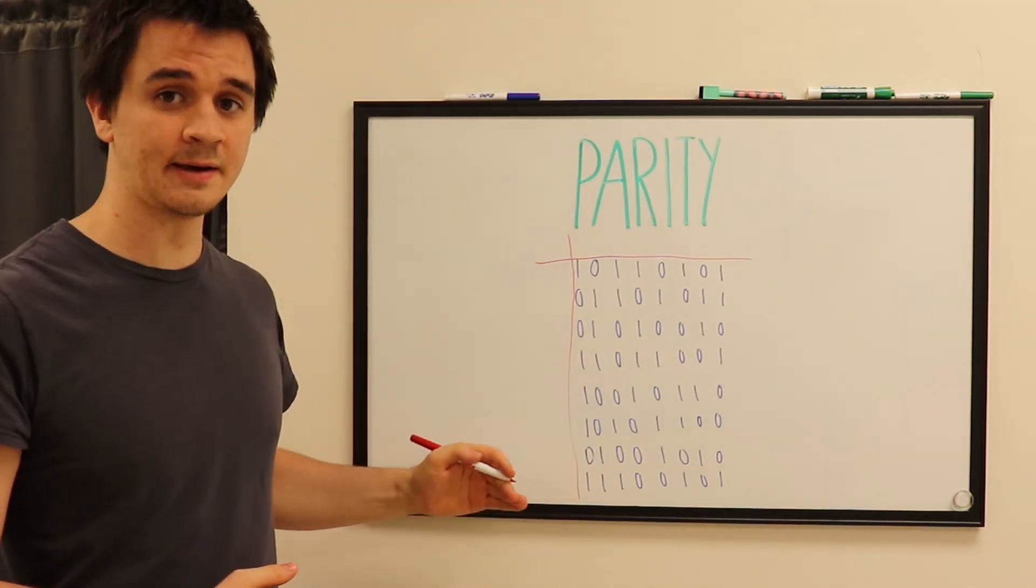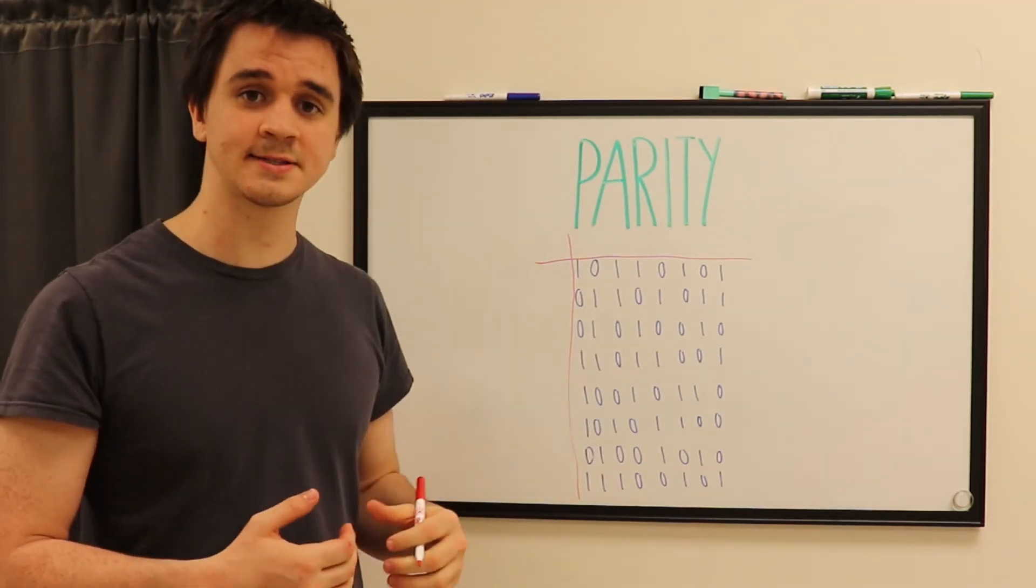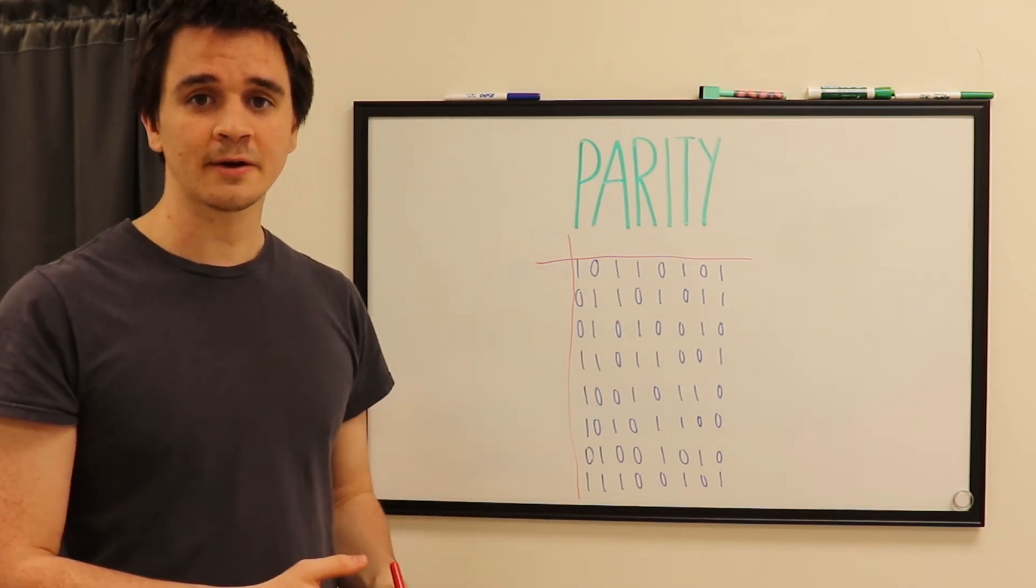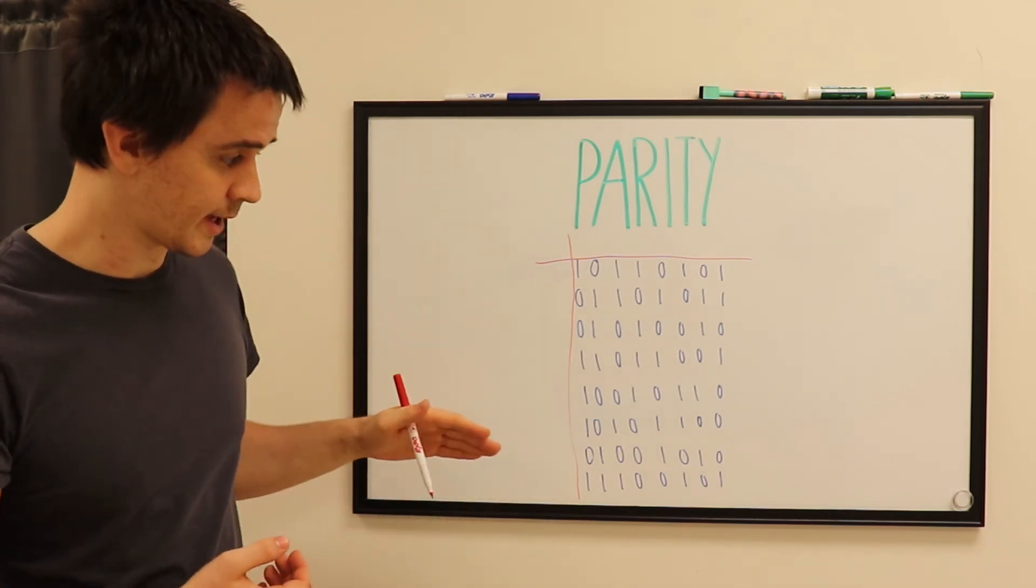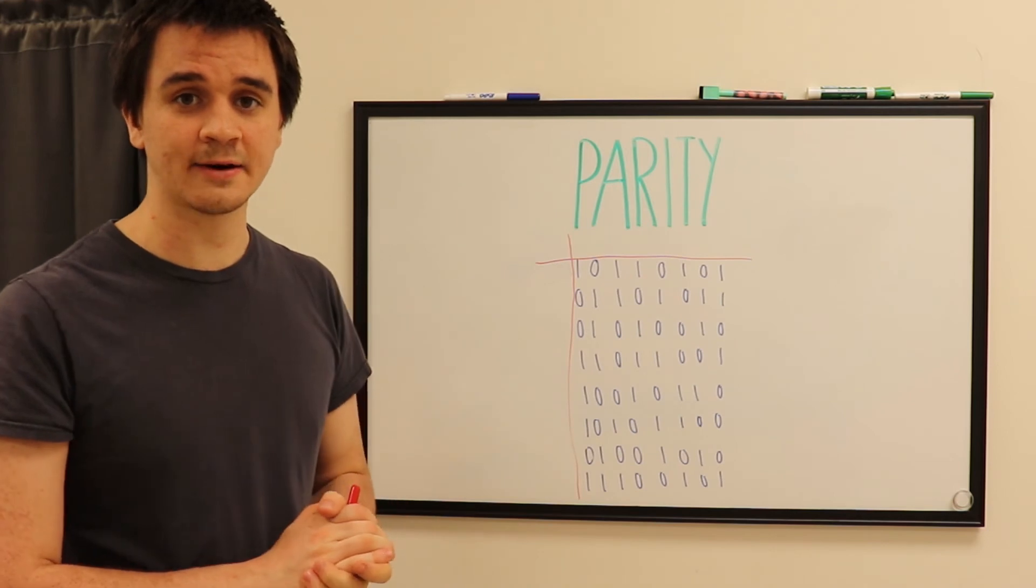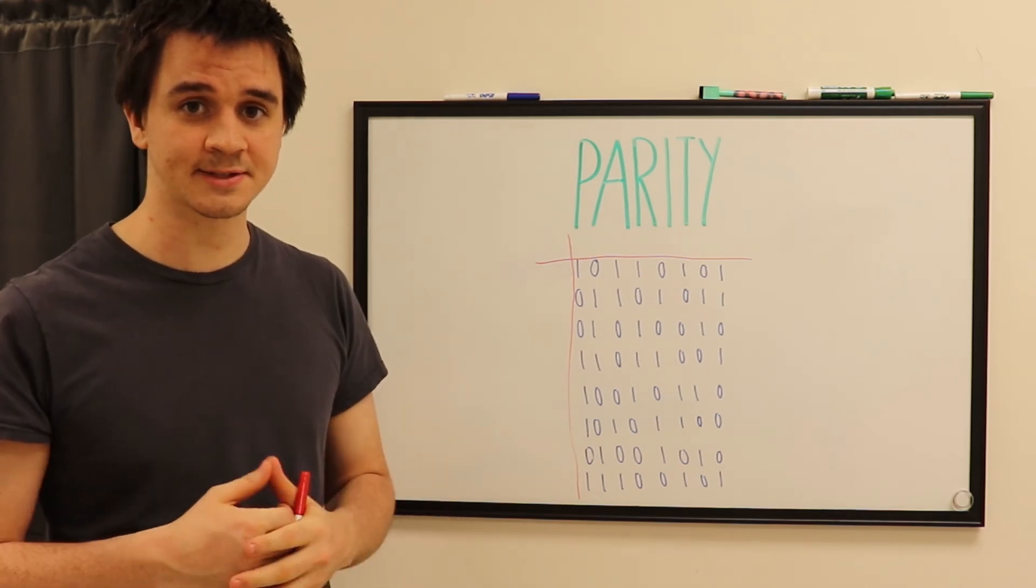So, here I have eight bytes, all in rows, and I would ask that you guys figure out the parity of each row. And, if you can pause the video right now and get that figured out, I'll give you guys a second.